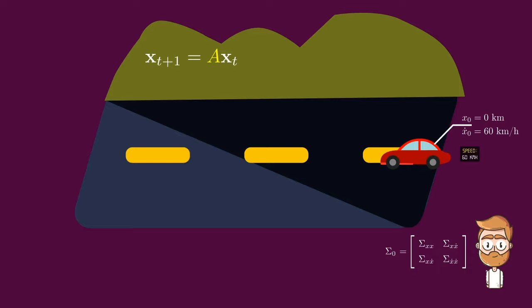The way to interpret this matrix sigma zero is that it represents your uncertainty about the state of the system. The first diagonal element represents the uncertainty that you have about the position of the car, and the second diagonal element represents your uncertainty about the speed. The off-diagonal elements represent the correlation between noise in measurements to the speed and to the position of the car.